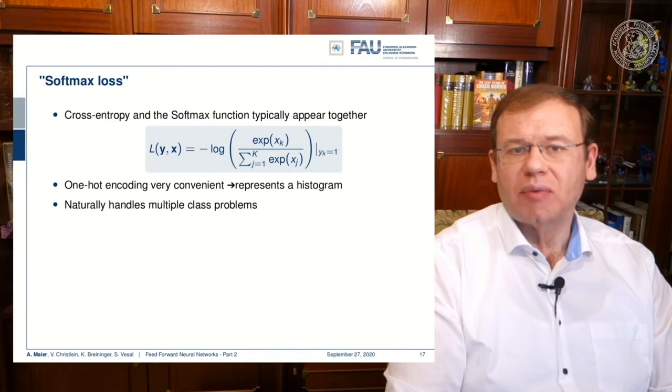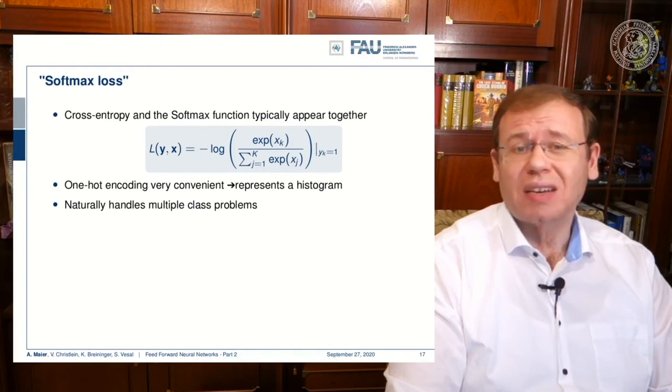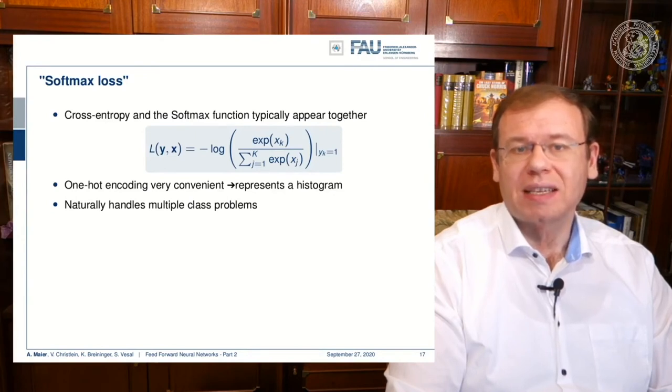So this is something that very typically is used in the training of networks. The softmax loss is very commonly used and very useful for one-hot encoded ground truth. Also it kind of represents a histogram, it's related to statistics and distributions. Furthermore, all of the multi-class problems can be handled in this approach in a single go.